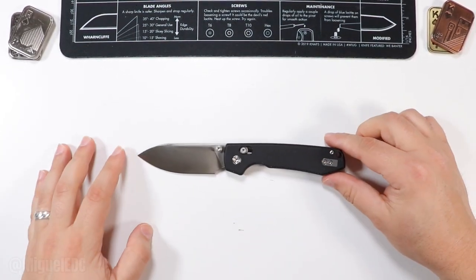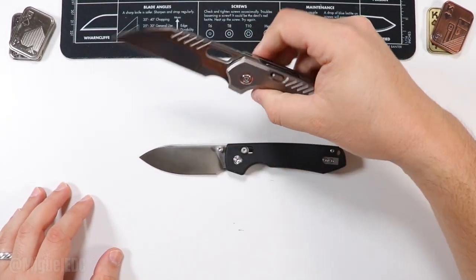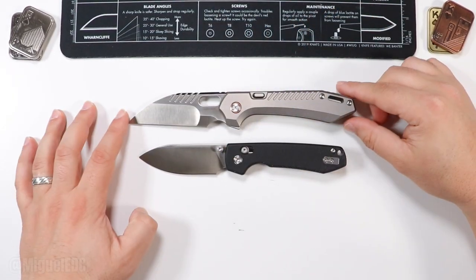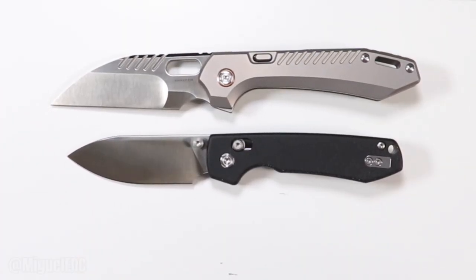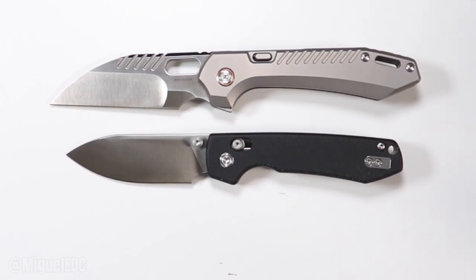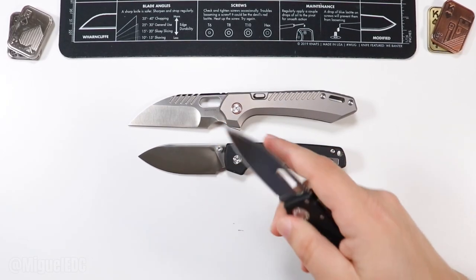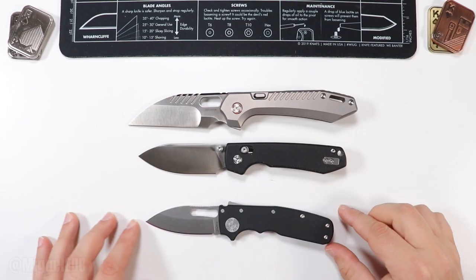Here it is next to the bigger brother, the RS Chaos, which just warps it in size. Those are two Vosteeds right there. Let's go ahead and bring in, what other knife can we toss in here?